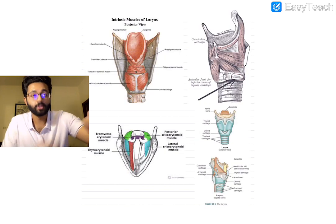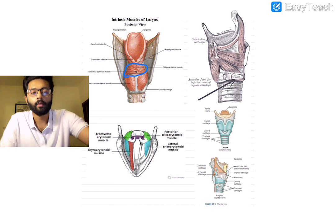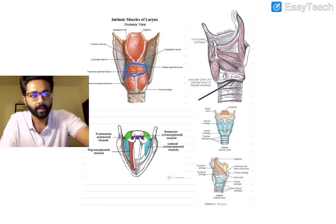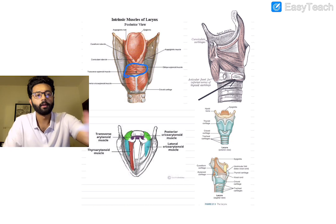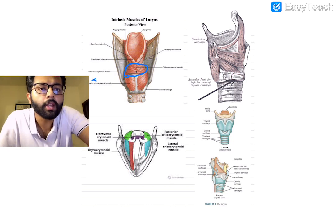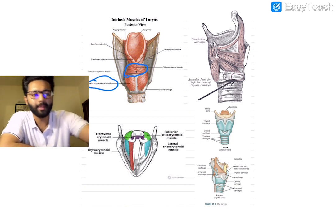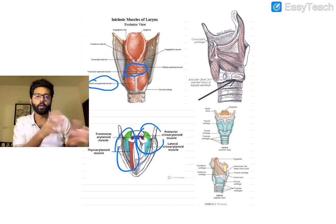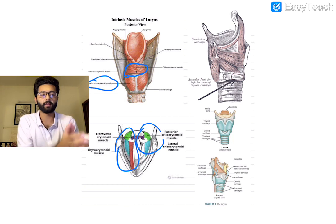Here are some images where you can see the muscles — the transverse arytenoid, which is an adductor, and the posterior cricoarytenoid, which is the abductor that splits the vocal cords. You can find these images on Google. I wanted to keep this under five minutes, so you can use this classification for your exam and know which nerve supplies what.